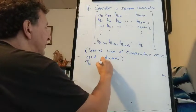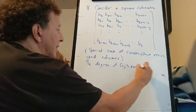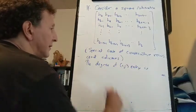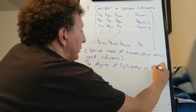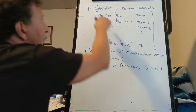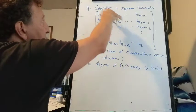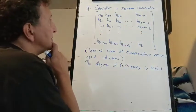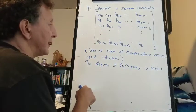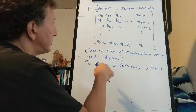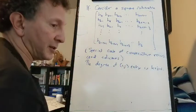Now the degree of the (I,J) entry is K plus J minus I. So it's K when I and J are equal, K+1 when J is 1 bigger than I, K+2 when J is 2 bigger than I, etc. That's the formula for the degree of the (I,J) entry.